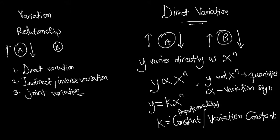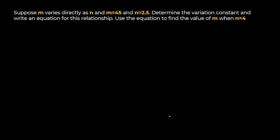Let's have a look at an example to see how we can practically apply this. Suppose m varies directly as n, and m is 45 when n is 2.5. We are to determine the variation constant, write an equation for the relationship, and use that equation to find the value of m when n is 4.